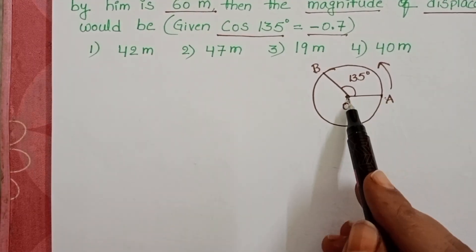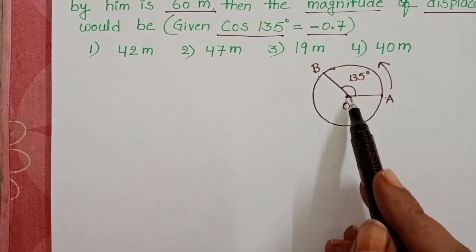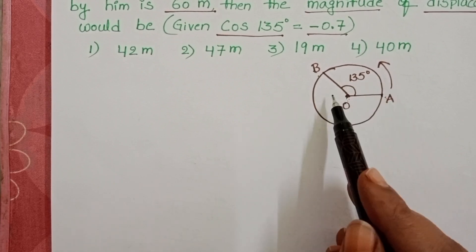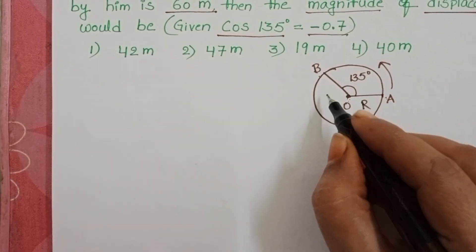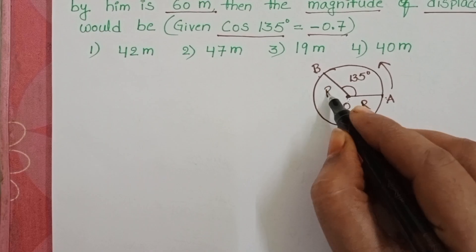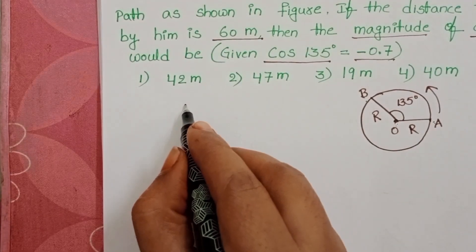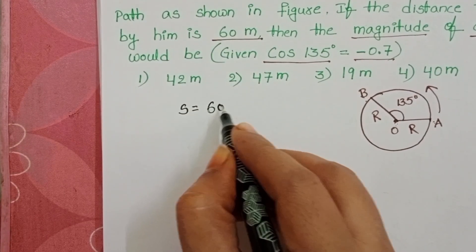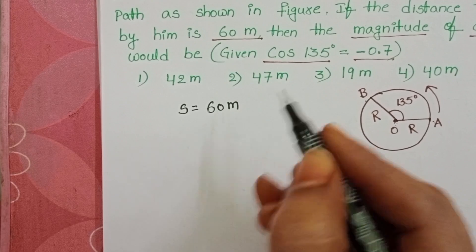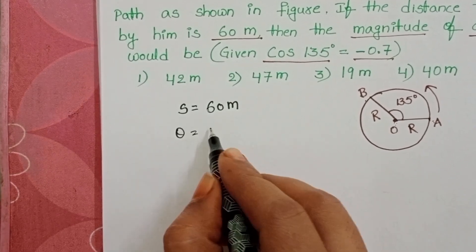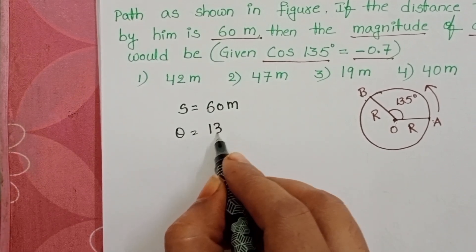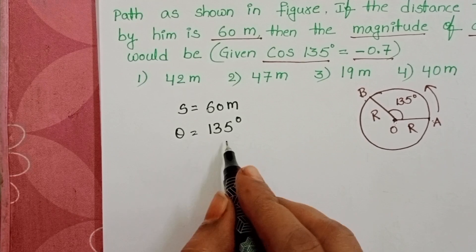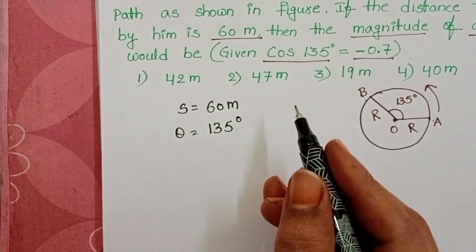Here O to A and O to B are nothing but the radius of the circular path. Let R be the radius. The distance travelled by the person is 60 meters, and the given angle is 135 degrees. We need to convert this angle into radians.